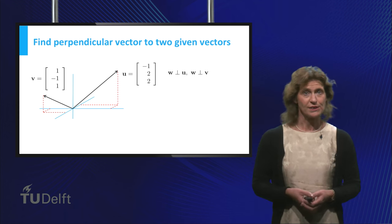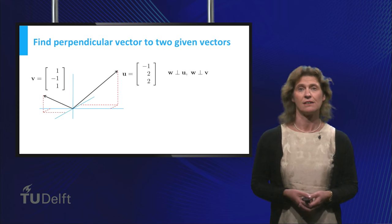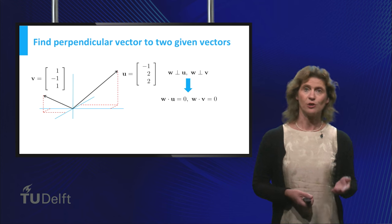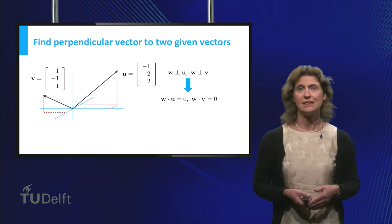Not a difficult question to answer, you would probably say. You know after all that this vector then should have the property that the dot product with both vectors equals zero.